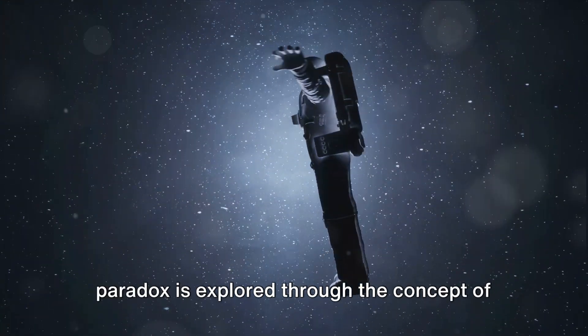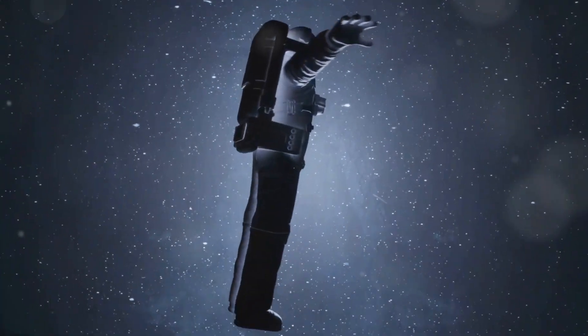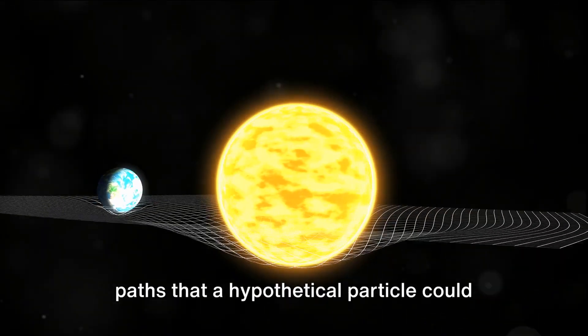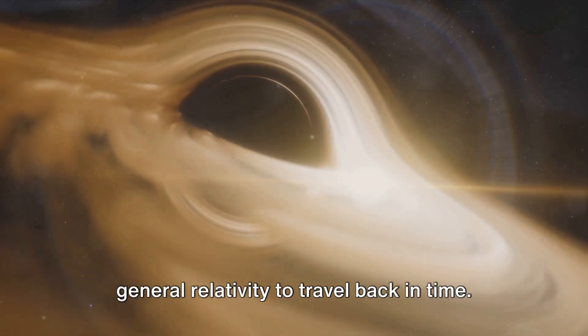In the realm of real science, this paradox is explored through the concept of closed time-like curves. Closed time-like curves, or CTCs, are paths that a hypothetical particle could take within the framework of Einstein's general relativity to travel back in time.